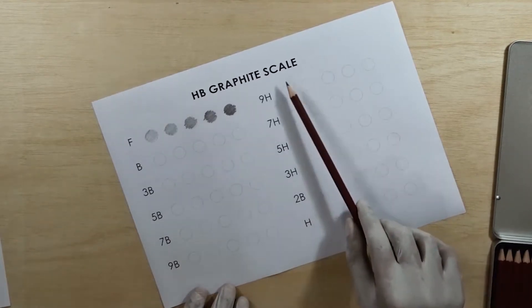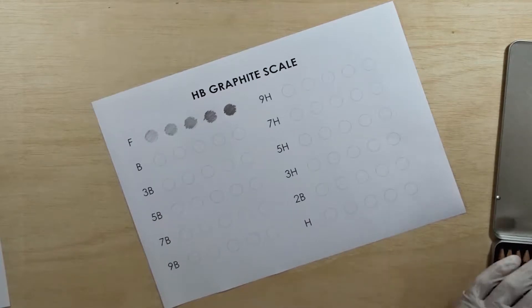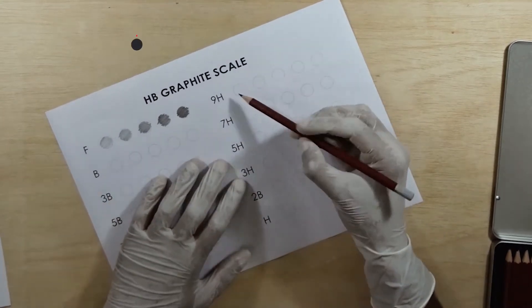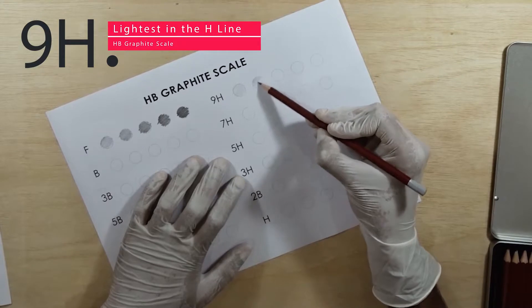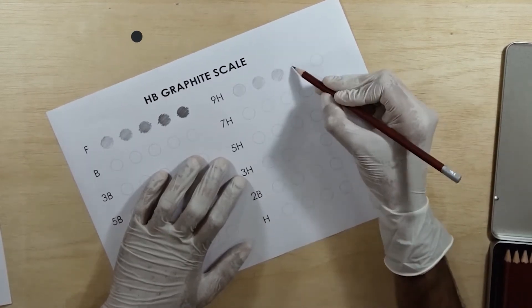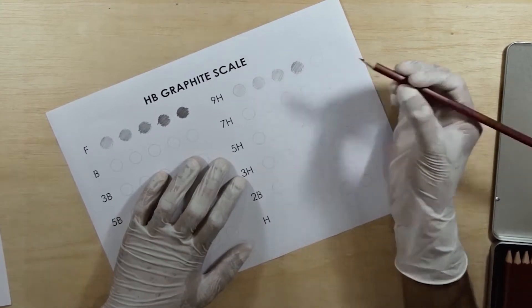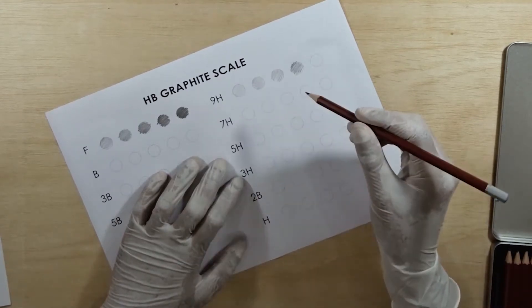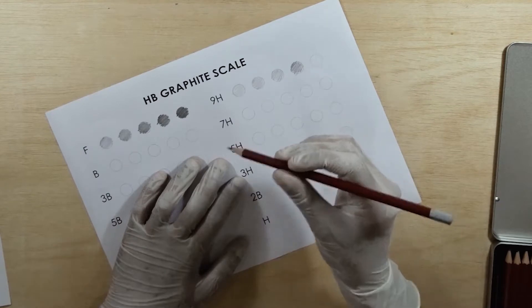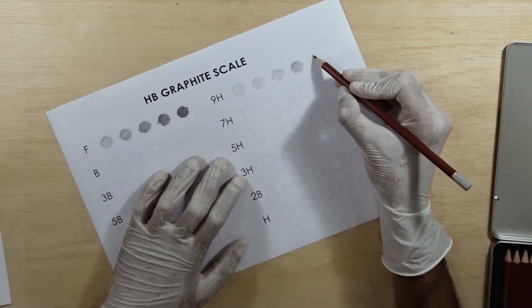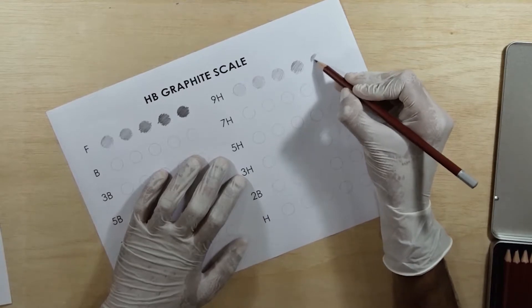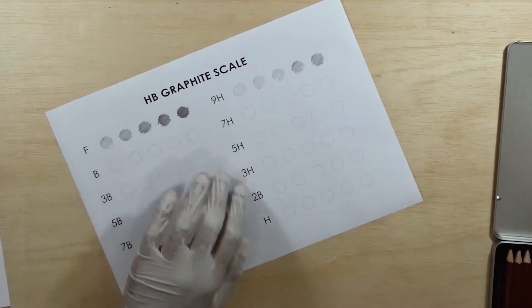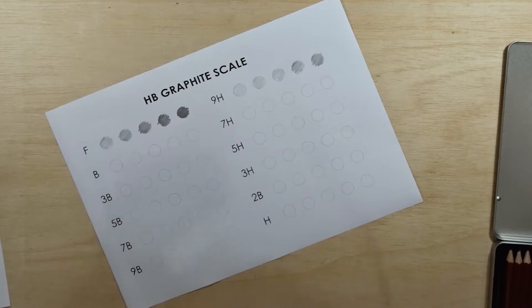So now we will use the 9H pencil over here. The 9H is a very hard pencil. It contains a very hard lead. It can sometimes rip off your paper, so be careful with the F-series pencils. So that's the result.